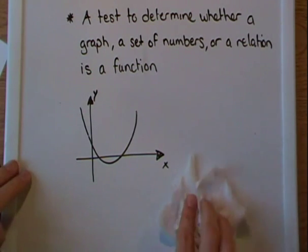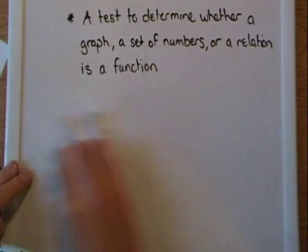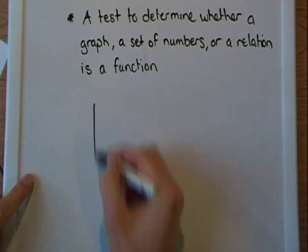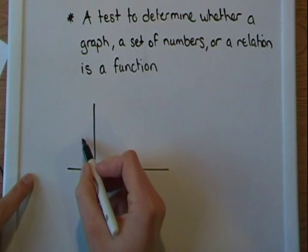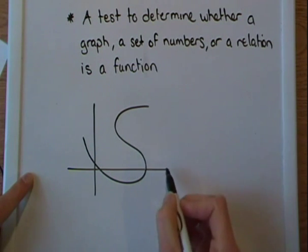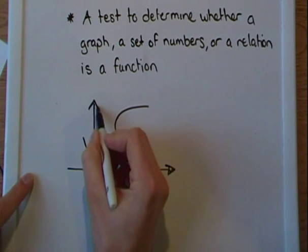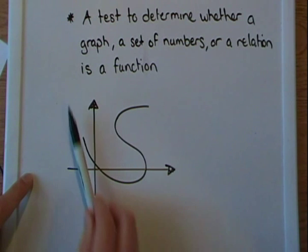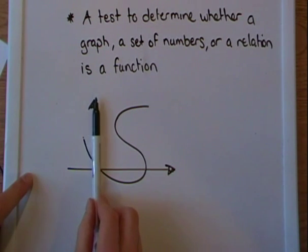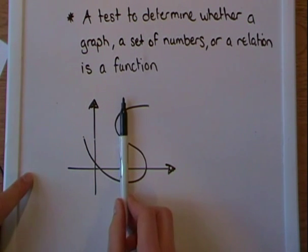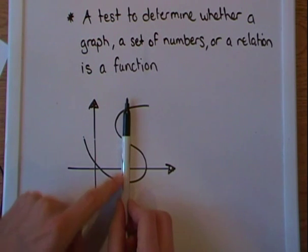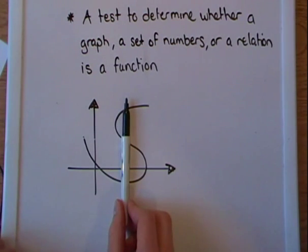On the other hand, if you would have had a graph that looked something like this, we can see that if I move the pen from left to right, all of a sudden the pen touches one, two, three spots at the same time, three points at the same time.